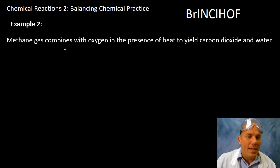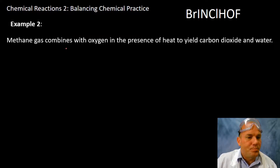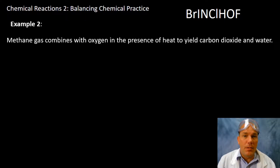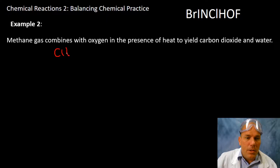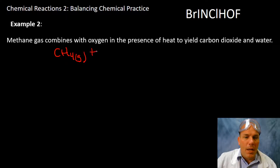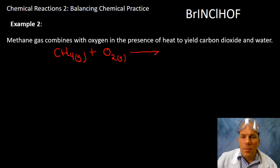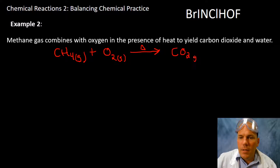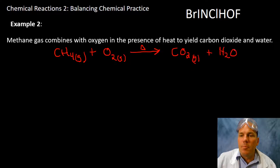Next example: methane gas combines with oxygen in the presence of heat to yield carbon dioxide. This reaction occurs any time you're using a Bunsen burner in class. Gaseous methane combines with oxygen gas in the presence of heat to yield carbon dioxide.